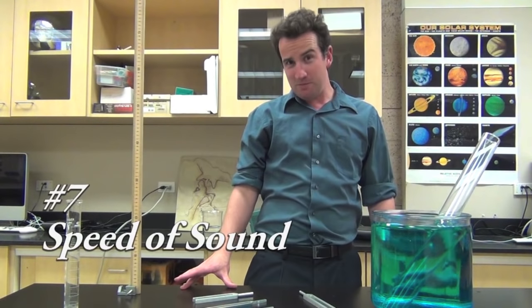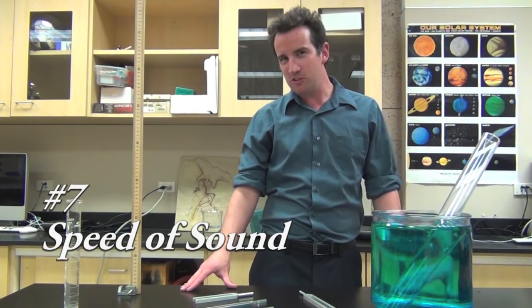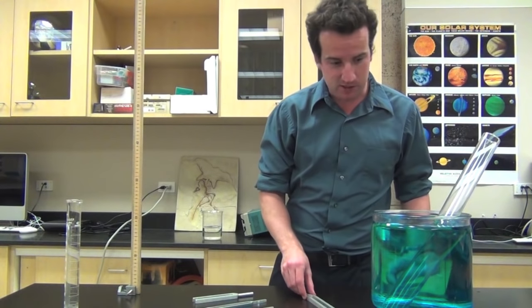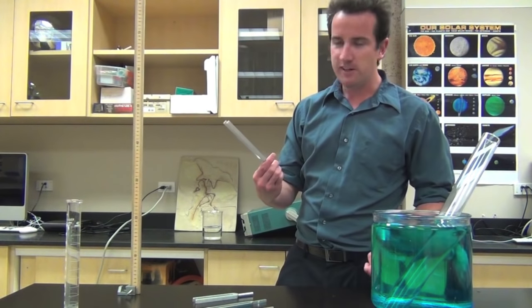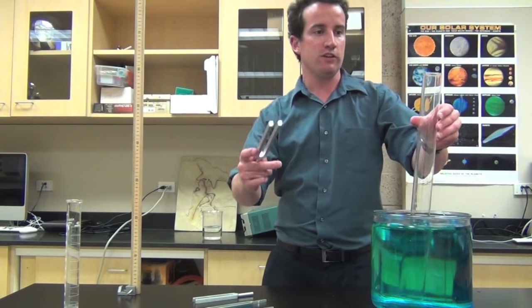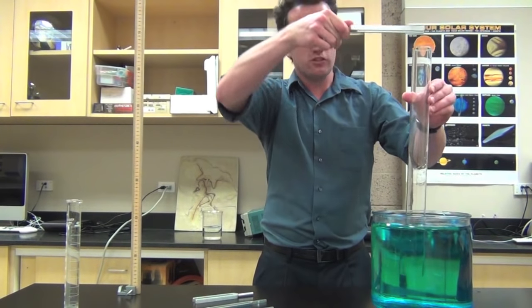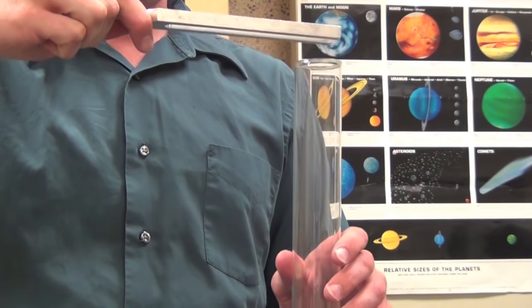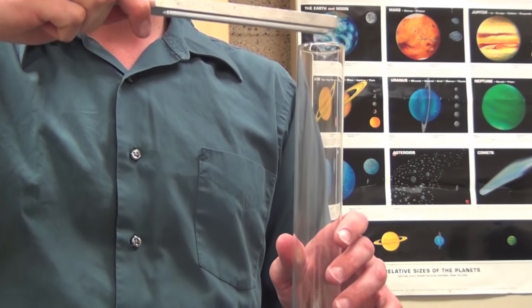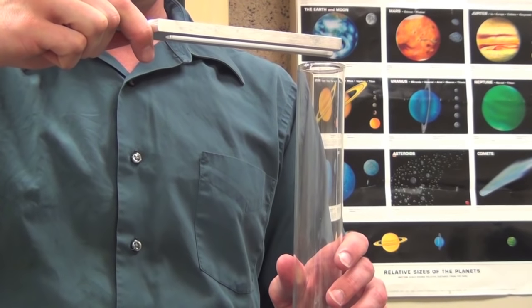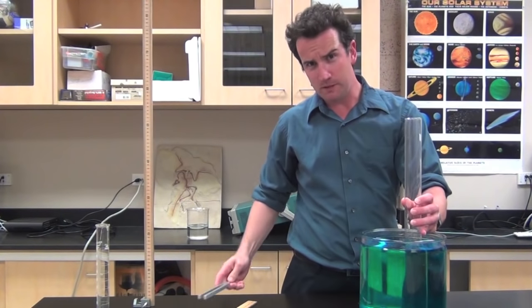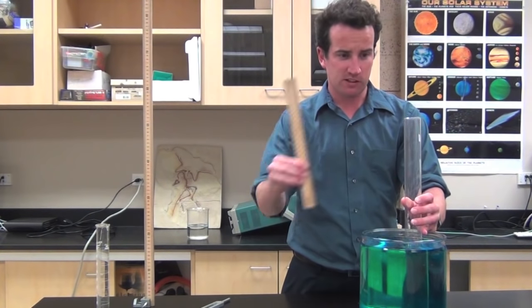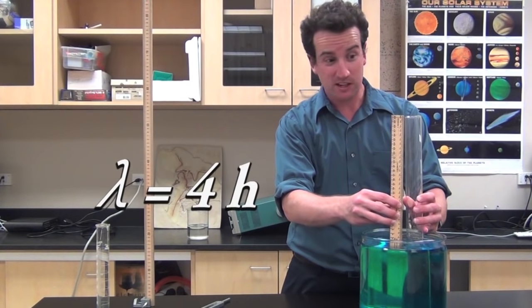One very common lab that uses tuning forks is measuring the speed of sound by resonance. Here, I've got a 288 hertz D tuning fork. I strike the tuning fork and hold it searching for the resonance. Then, by measuring the height at resonance, you can determine the wavelength of the sound.